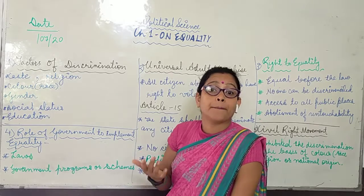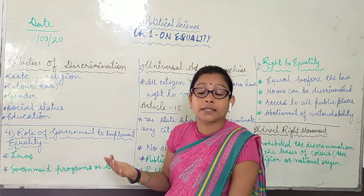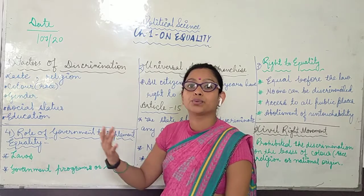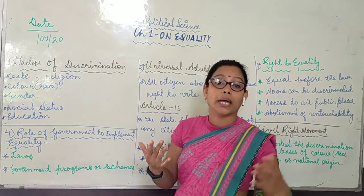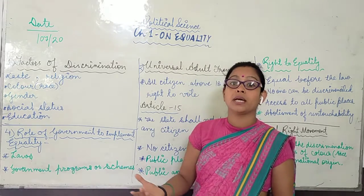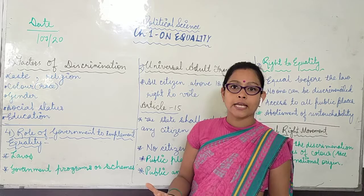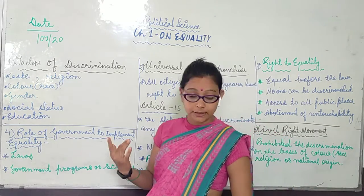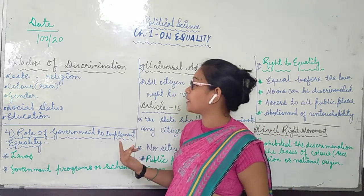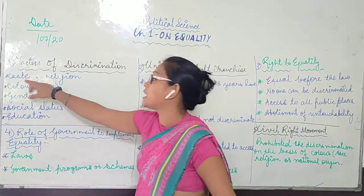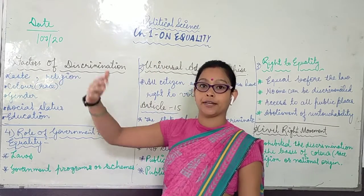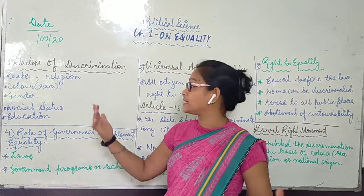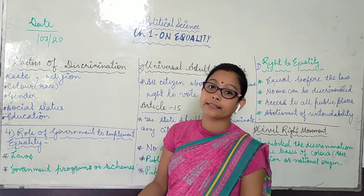The factors of discrimination are those on which people discriminate or show partiality towards others — how one citizen differentiates from another. The first factor is caste. Some people belong to higher castes like Pandits or Kshatriyas, and some may be of lower caste like Dalits.